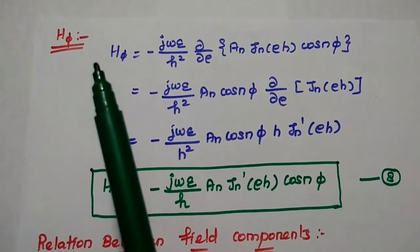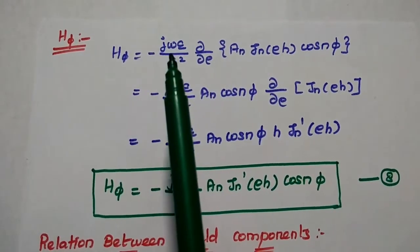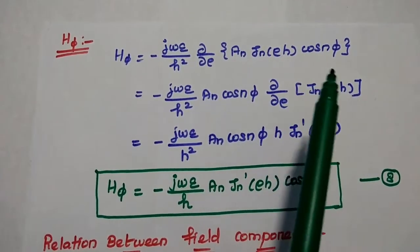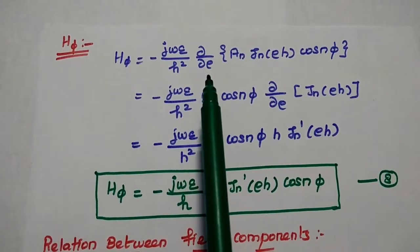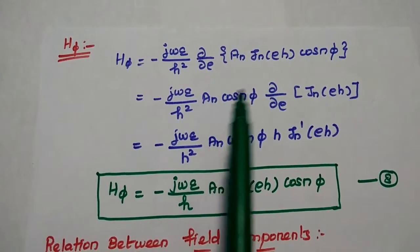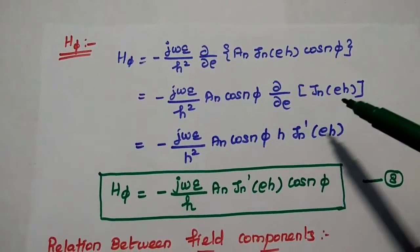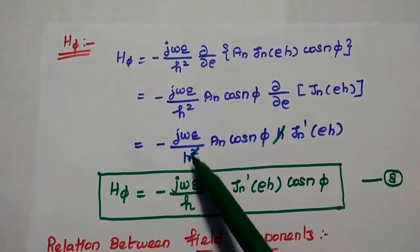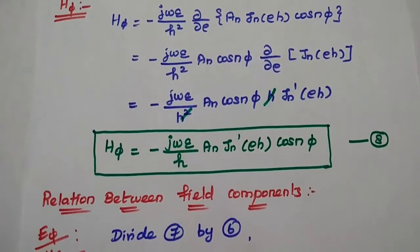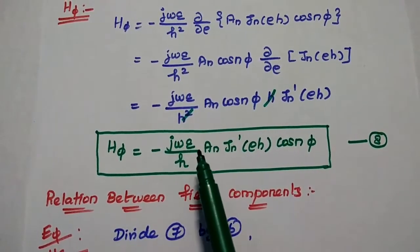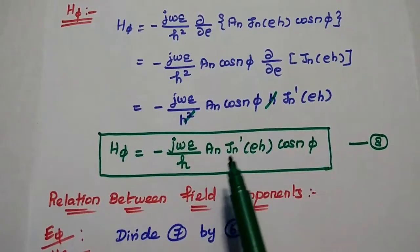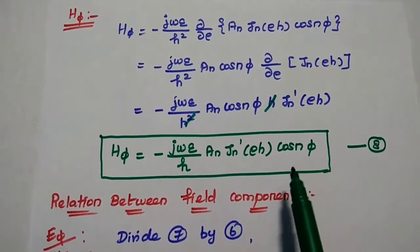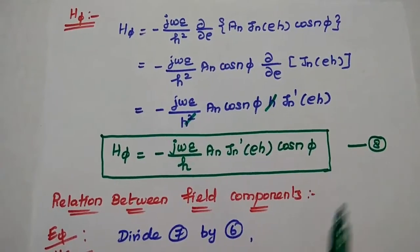The last field component: H phi is equal to minus J omega epsilon by H square, dou by dou rho of AN JN of rho H cos N phi. Here we differentiate with respect to rho. We take AN and cos N phi outside, and the differentiation of JN of rho H gives H into JN dash of rho H. Then we get H phi is equal to minus J omega epsilon by H, AN JN dash of rho H cos N phi. Consider this as the eighth equation.